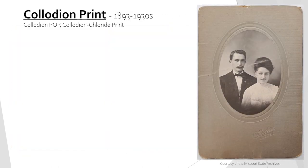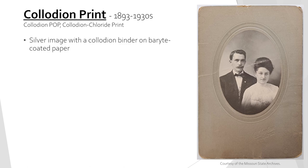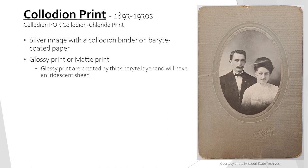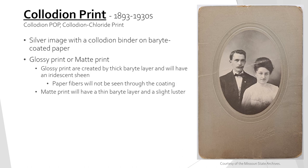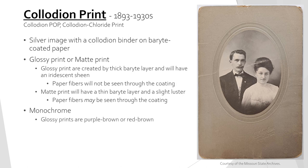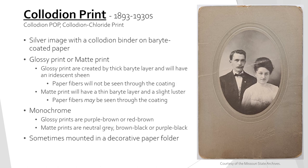Collodian prints were made from 1893 to the 1930s. They are a silver image with a collodian binder on a barite coated paper. There are two types of collodian prints: glossy and matte. Glossy prints are created by a thick barite layer and will have an iridescent sheen, and the paper fibers will not be seen through this thick coating. Matte prints have a thin barite layer and will have a slight luster; the paper fibers may be seen through this thinner coating. Both types create a monochrome image. Glossy prints have a purple-brown or red-brown hue, while matte prints are more neutral gray, brown-black, or purple-black. Collodian prints can sometimes be found mounted in a decorative paper folder, such as the matte collodian print on the right.